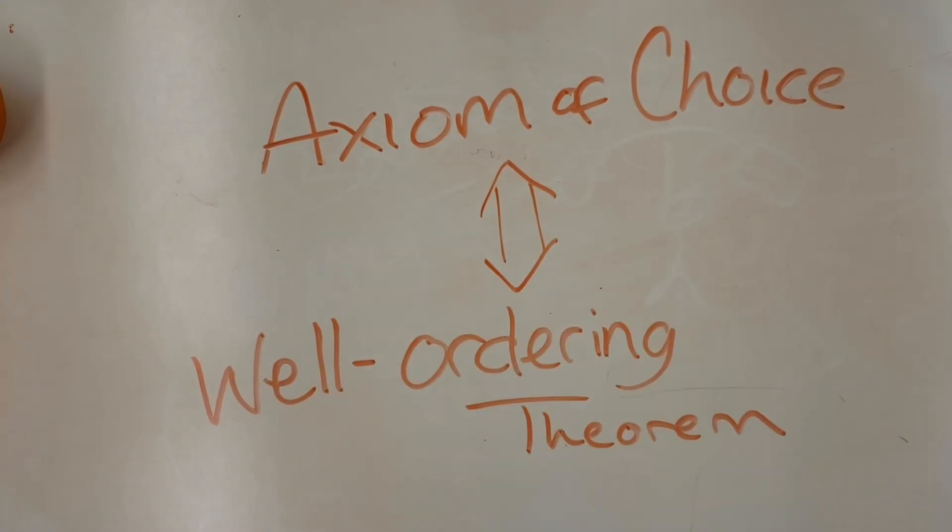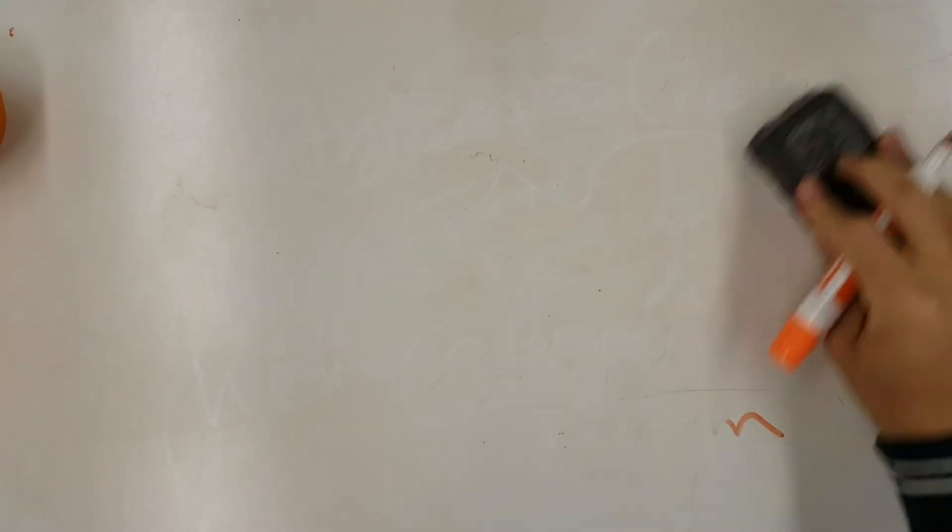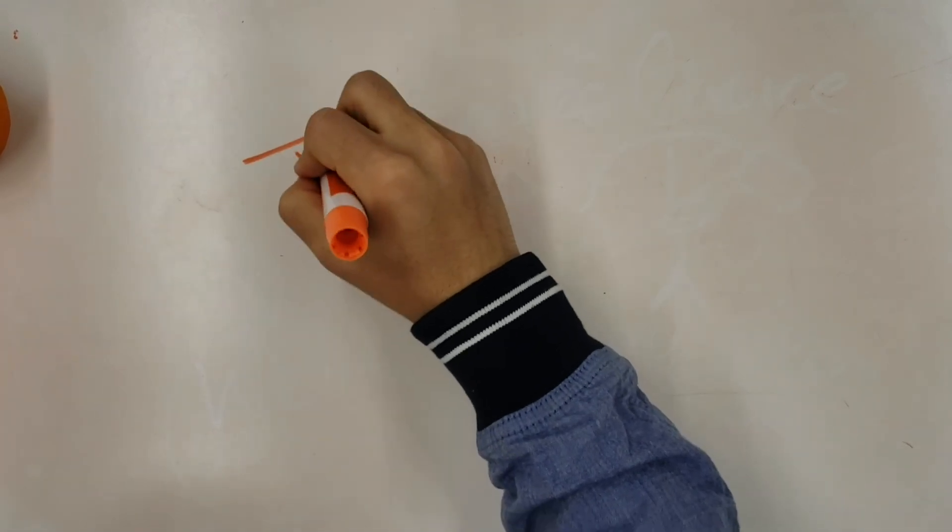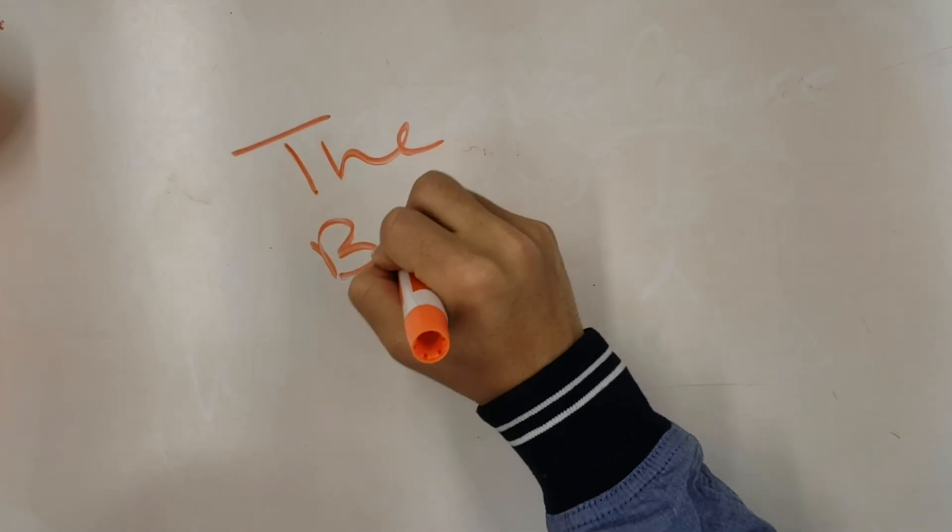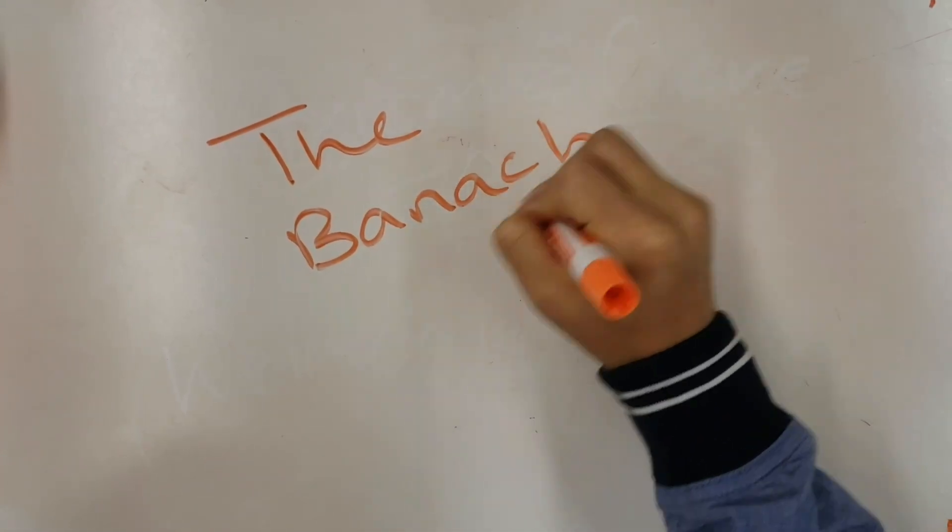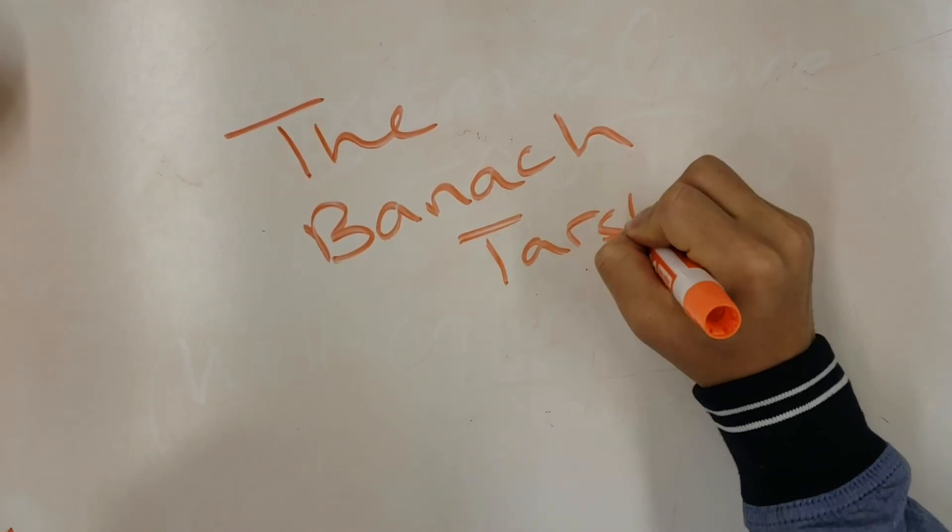However, there is another more absurd consequence of the axiom that lurks in the shadows, touched on in the beginning: the Banach-Tarski paradox. As our last example, consider an orange split into a finite number of pieces.